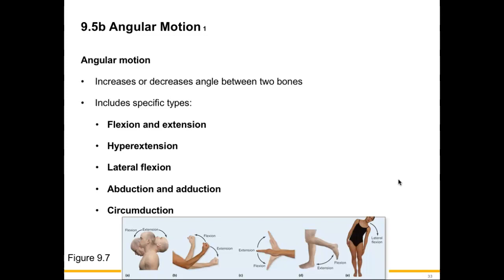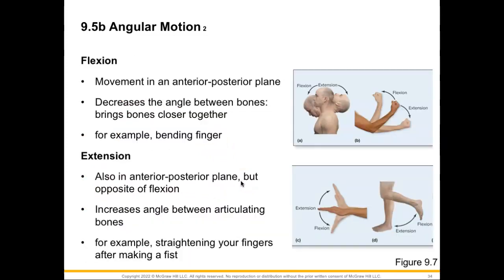For our angular motion, this is going to occur when we increase or decrease an angle between two bones. We'll start off with flexion, which takes place in our anterior and posterior plane. It occurs when we decrease the angle between two bones — for instance, between the humerus and our ulna and radius. Pulling this forearm in causes flexion of the forearm at the elbow.